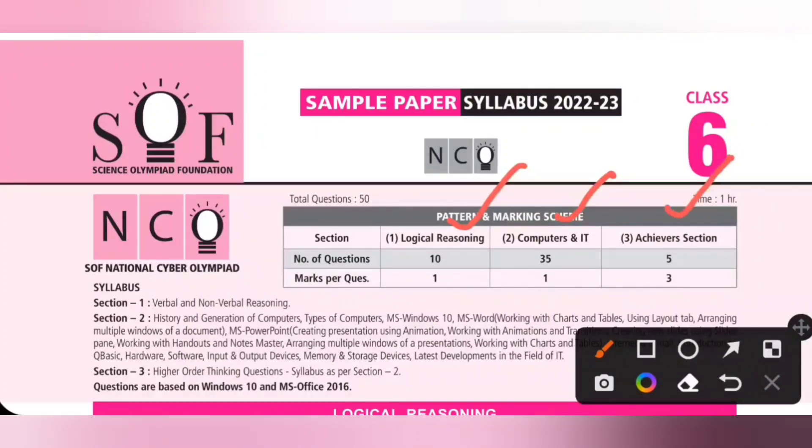Logical reasoning consists of 10 questions, each carries 1 mark. Computers and IT consists of 35 questions, each carries 1 mark. Achievers section, total 5 questions and each carries 3 marks. Total marks: 10 plus 35 plus 15, so 60 marks.